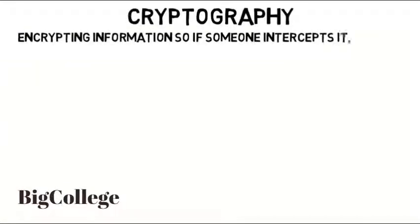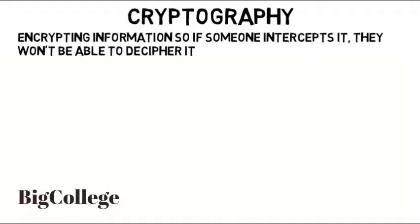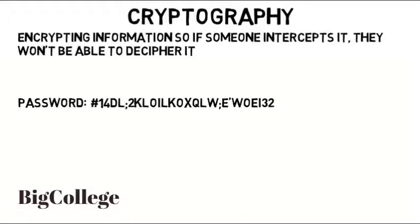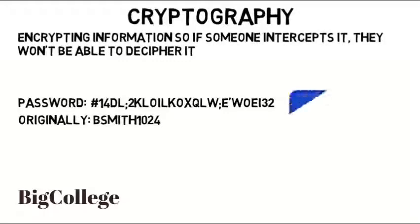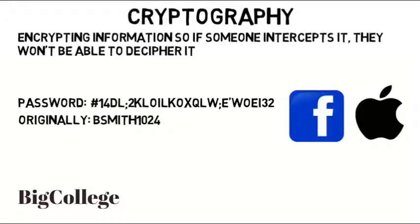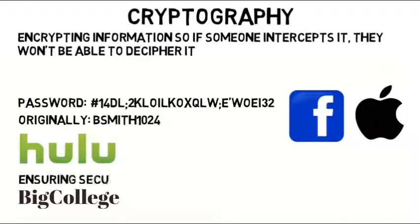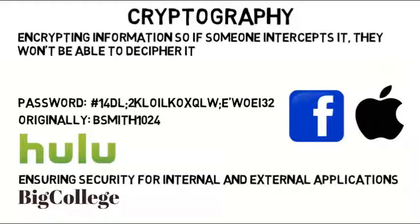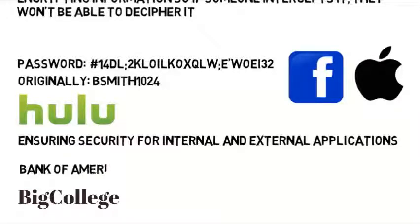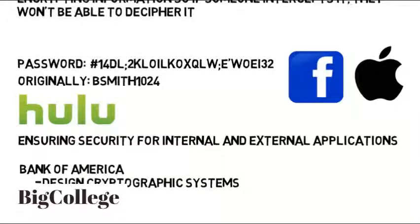The next area is cryptography — basically about encrypting information so that if someone intercepts the data, they won't be able to decipher it. If you hacked a company's database like Facebook's and came across the password information for its users, the passwords look really weird because they're encrypted. Even if someone hacks the database and has the usernames, they can't just use that information to log in. The encryption is designed to be very difficult to decrypt back to the original word or phrase. Companies like Facebook or Apple need to encrypt their data, especially for credit card information and passwords. I found job listings at Hulu for ensuring the security of internal and external applications including cryptography, and at Bank of America where you'd have to understand and design cryptographic systems and stay up to date with emerging threats.